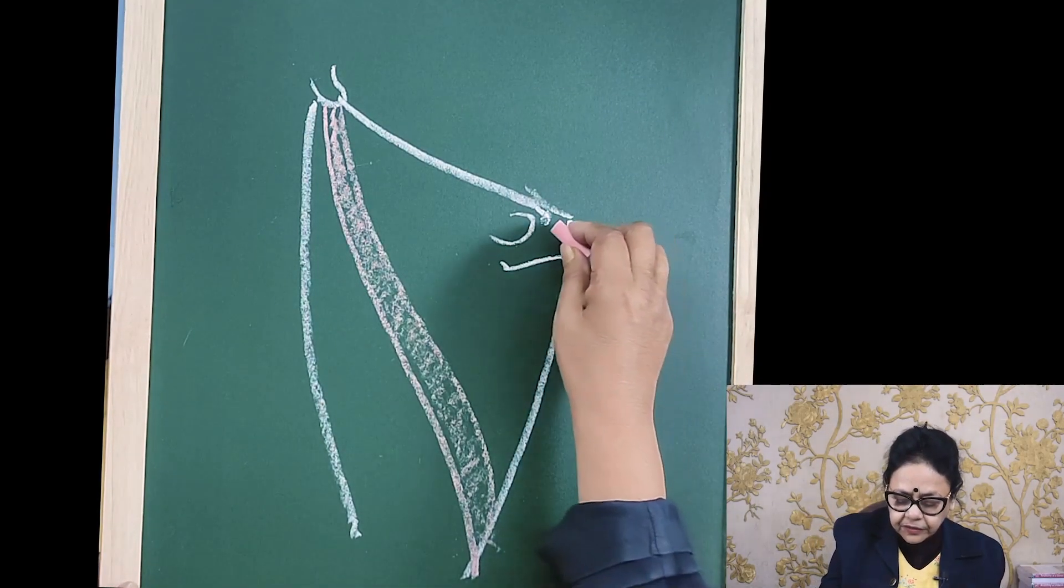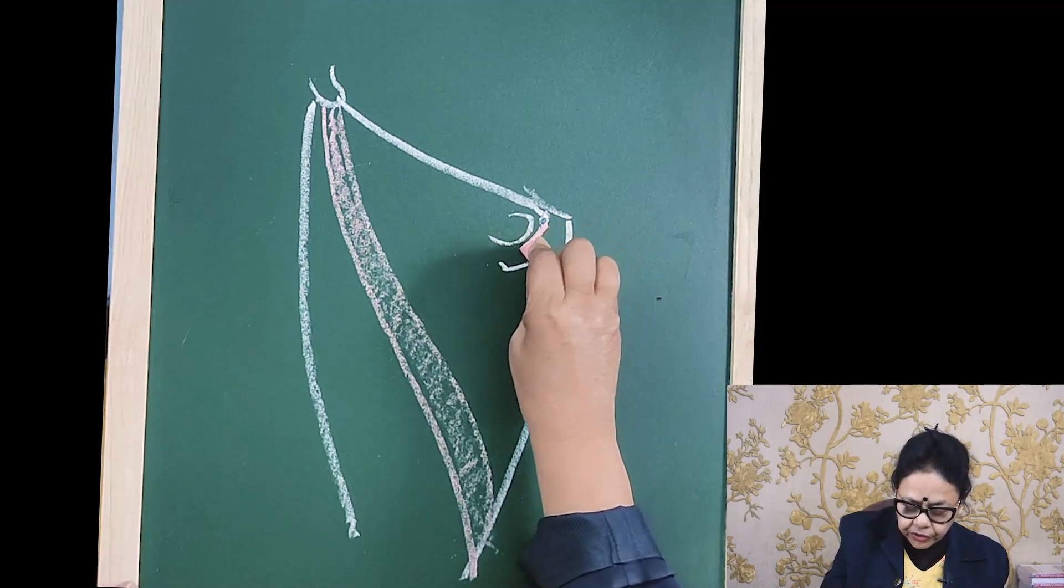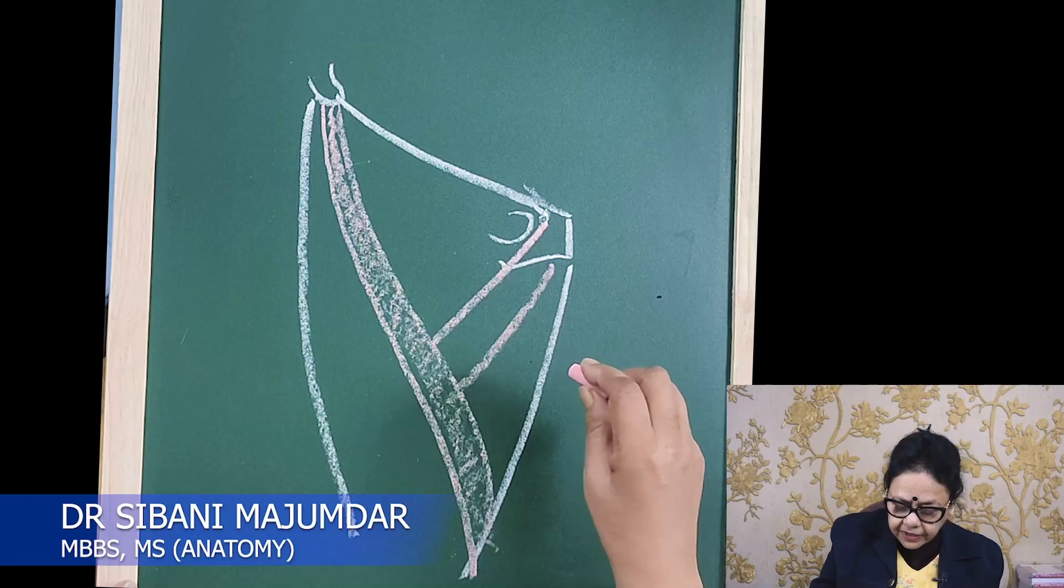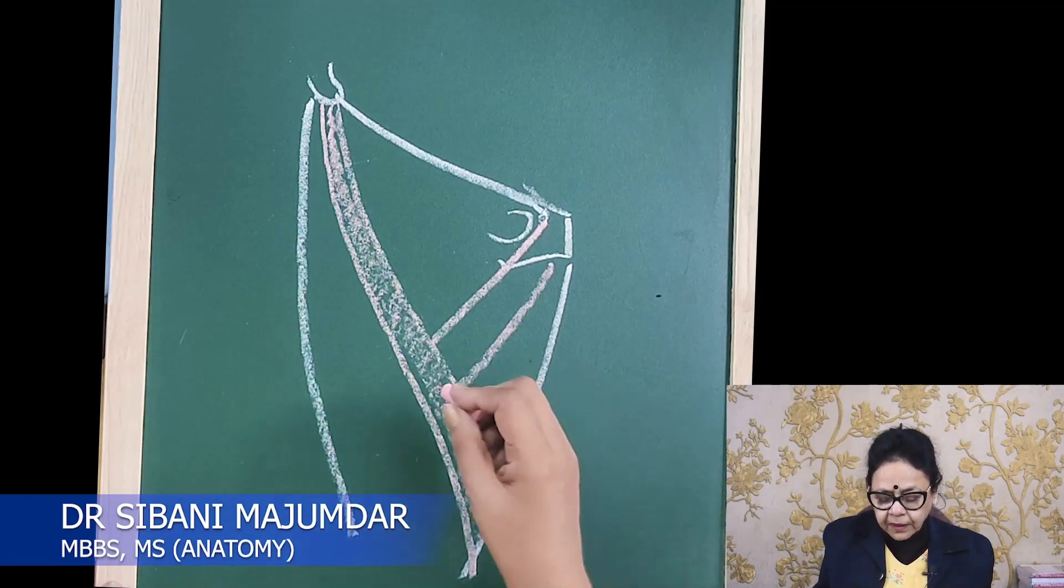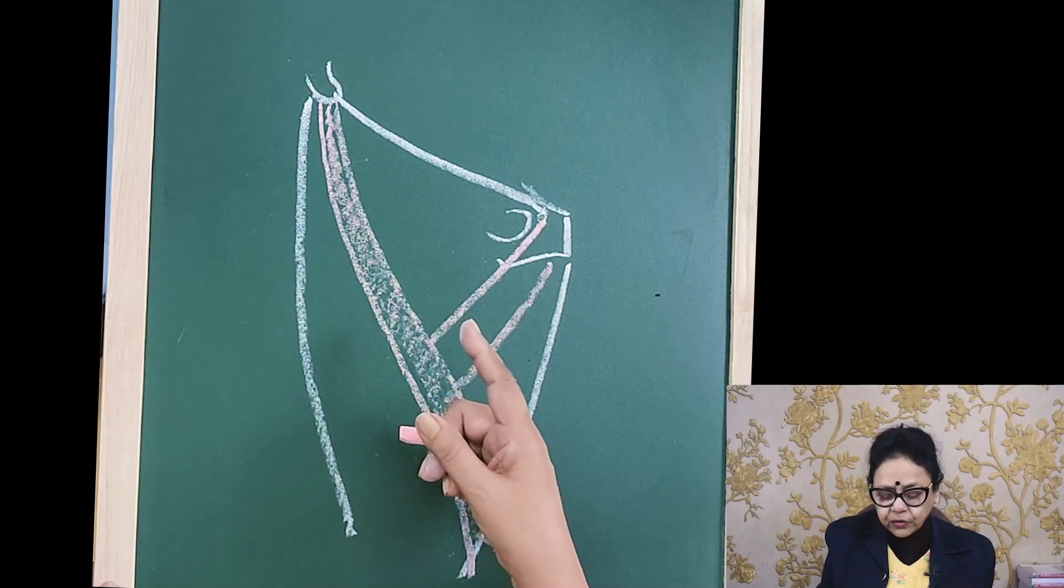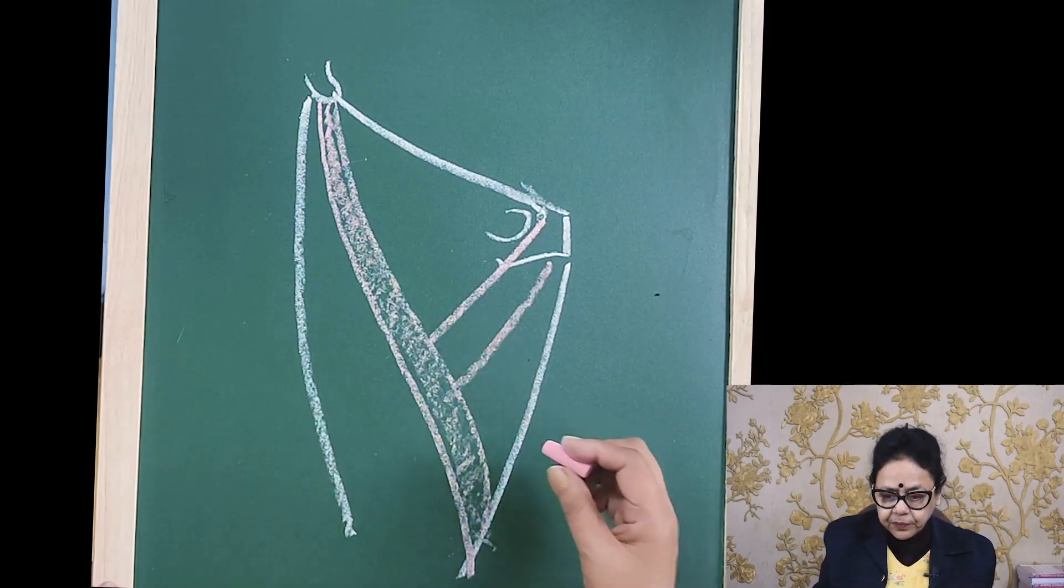Medially you will see the drawing of the adductor longus. So this is the adductor longus muscle. In between there is the triangle. You can feel in your own body that there is a depression here.